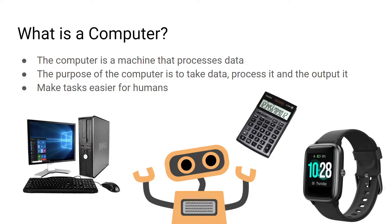A computer is basically a machine that processes data. The purpose of a computer is to take some form of input, process it and then produce an output. Computers are basically machines that have been created to make tasks easier for humans.